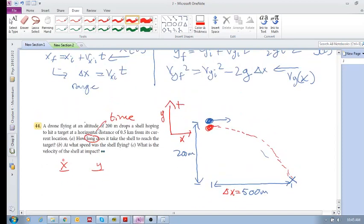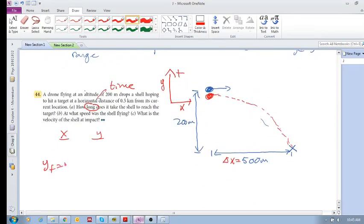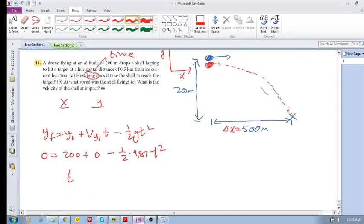Okay, so let's rewrite that. So y final is y initial plus vy initial times time minus half gt squared. Now my y final, what is my y final? It'll be 0, right? Because my final y position will be 0. My initial y position is plus 200. My initial velocity is 0, so this becomes 0 times time. And then I'm going to have minus a half times 9.81 t squared. So if you solve for t there, you should get roughly 6.38 seconds. So there's your answer. That is how long it takes for this projectile to hit the target.